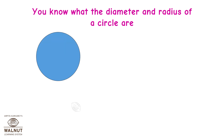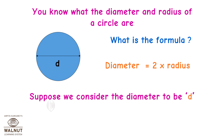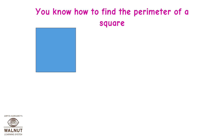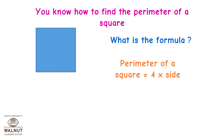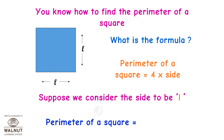You know what the diameter and radius of a circle are. Diameter is equal to 2 into radius. Suppose we consider the diameter to be D and the radius to be R. Then D is equal to 2 into R. You know how to find the perimeter of a square. Perimeter of a square is equal to 4 into side. Suppose we consider the side to be L. Then perimeter of a square is equal to 4 into L.